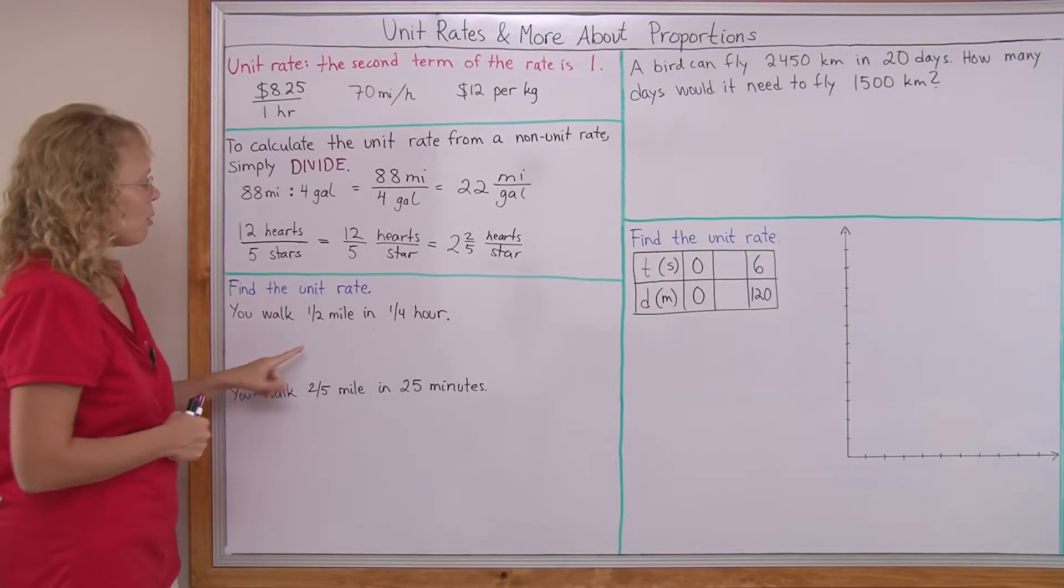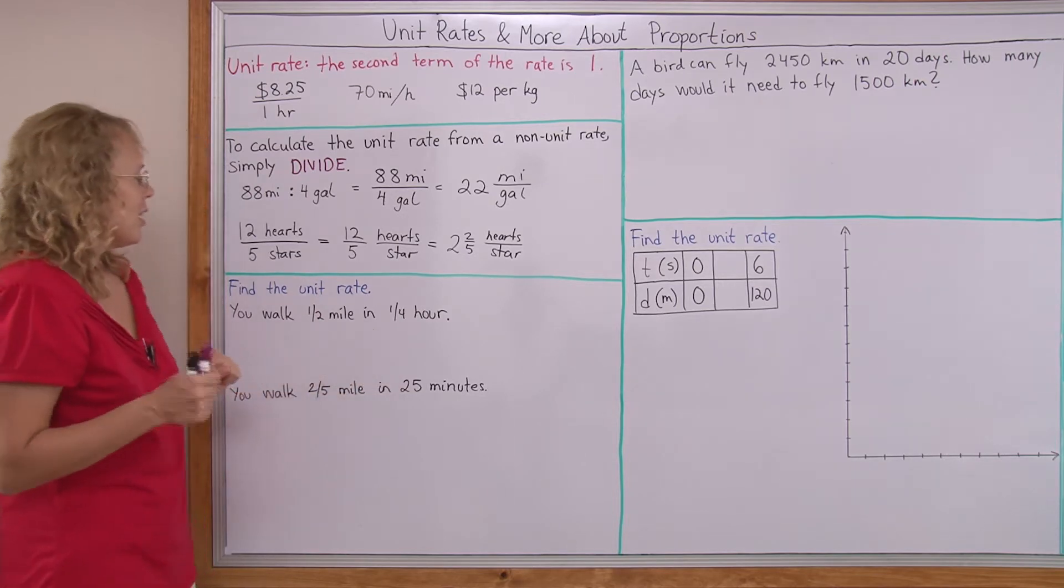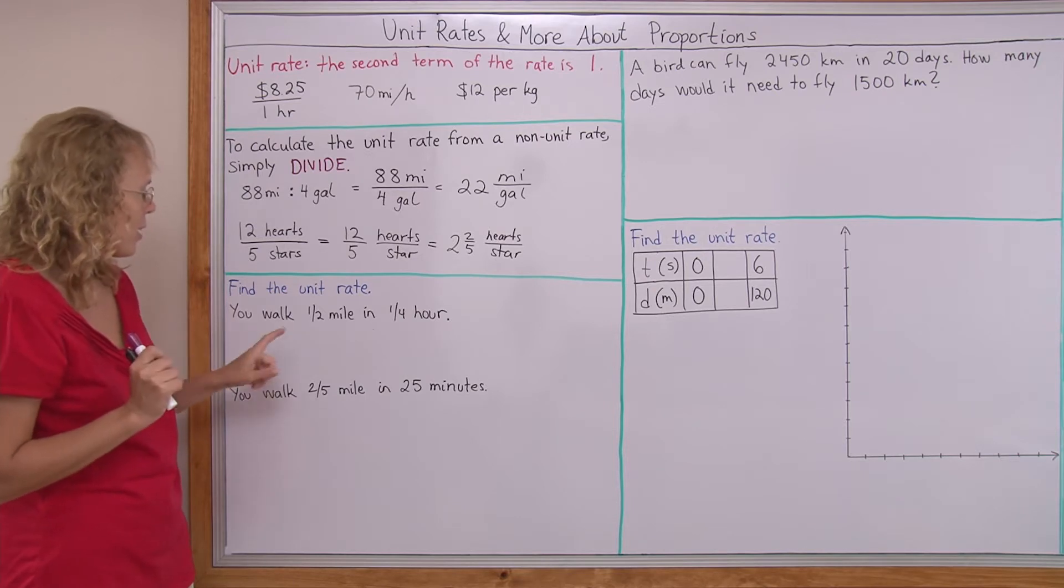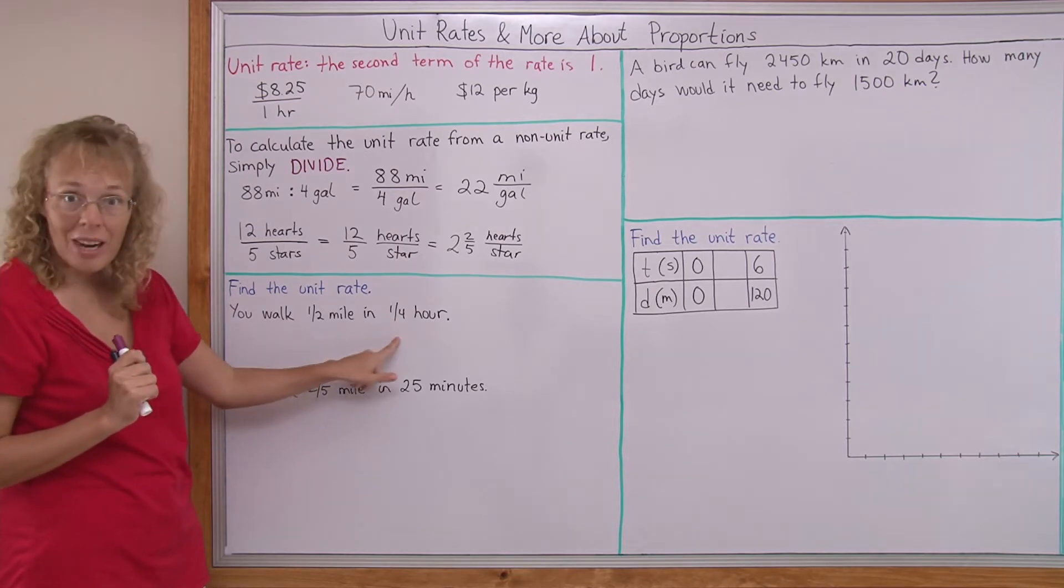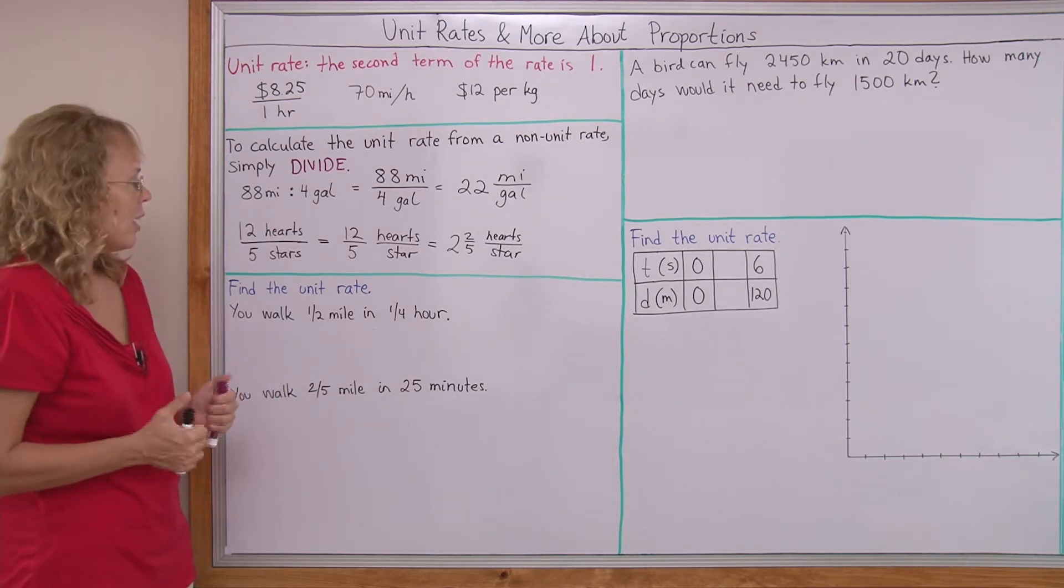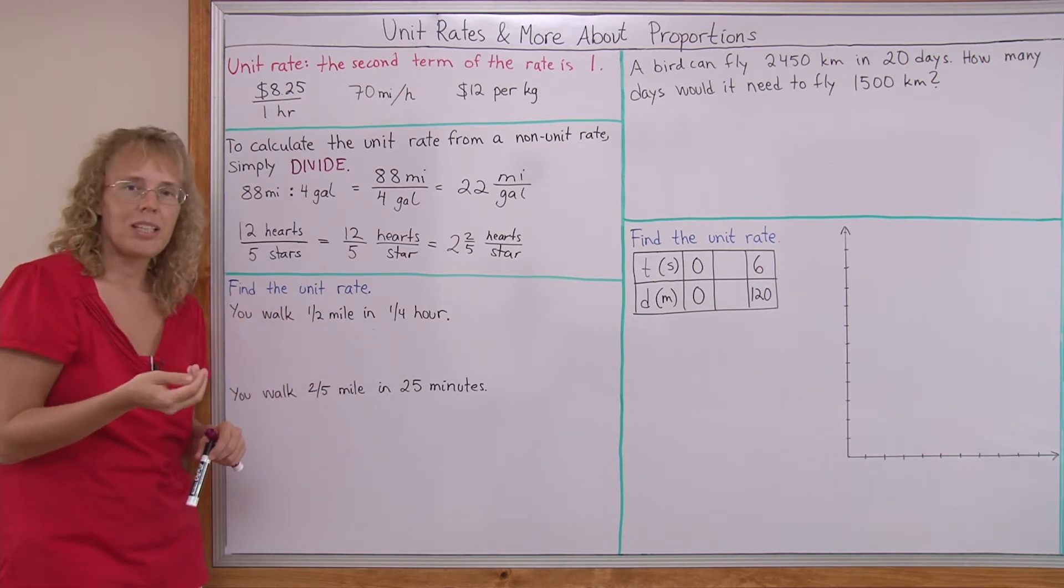Find the unit rate here. You walk half a mile in one-fourth of an hour. Since we want the unit rate, we are looking for how many miles in one hour. And this is one-fourth of an hour, it's 15 minutes.